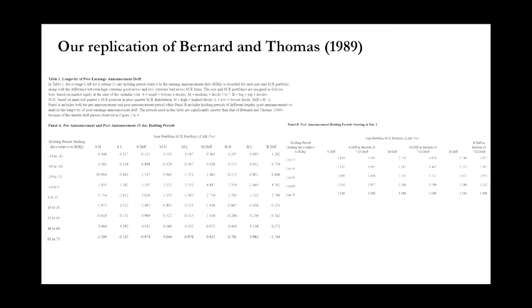In our 2022 replication, the small firms' drift and reversal happen faster than before — the drift develops from one to 15 days instead of the eight months observed in Bernard and Thomas 1989. The drift also takes about 15 days for big firms. Interestingly, big firms have larger reactions than small firms. For firms in the lowest decile, the return is negative 2.9 for small firms versus negative 2.5 for big firms, because it is easier to short a big company — institutional investors own big-company stock, so borrowing shares is less difficult due to greater supply.